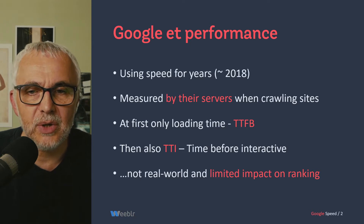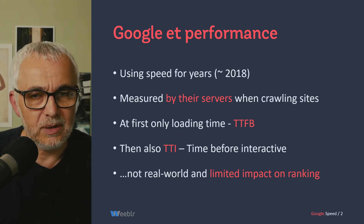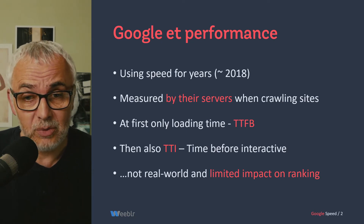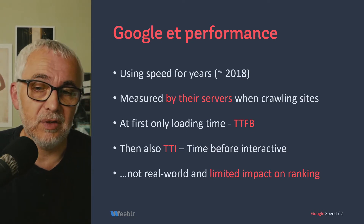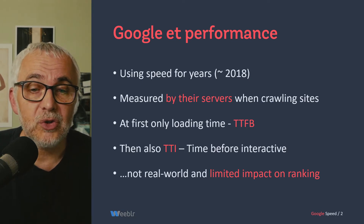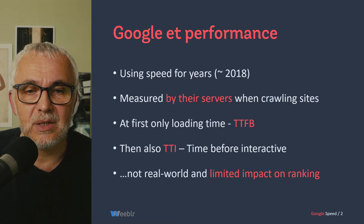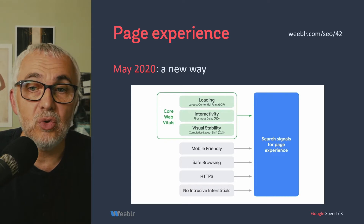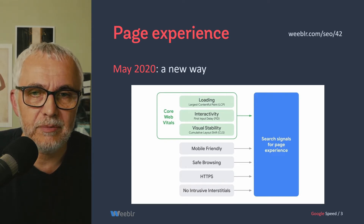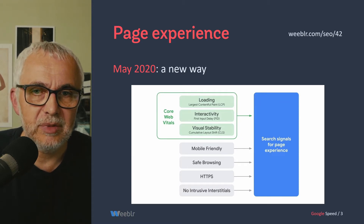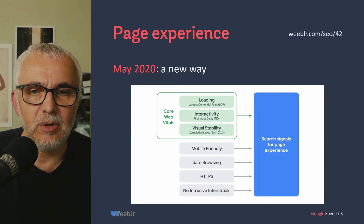At some point they also added a measure of interactivity — when you were starting to be able to interact with the page. Obviously, that was not a real-world experience and it was also having a very limited impact on ranking. So about a year ago, a bit more than a year ago, they came up with a new way of measuring speed and including that into their ranking strategy. This is called the page experience update and it has several parts.